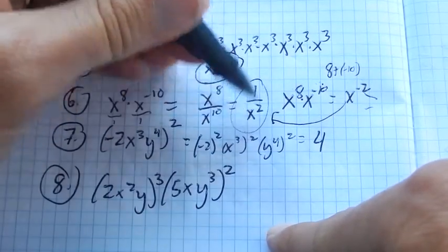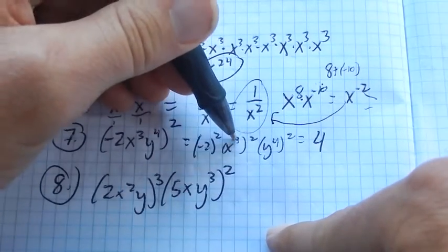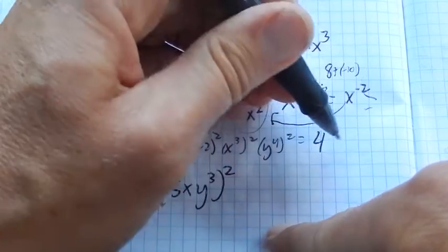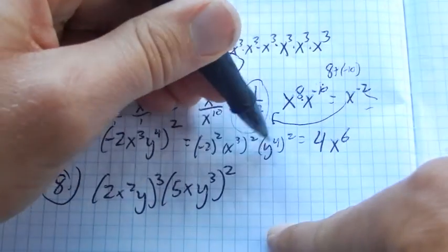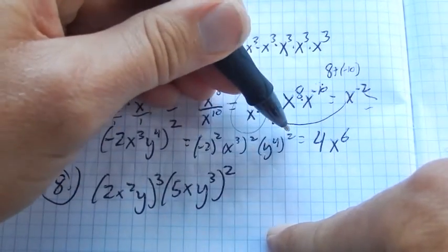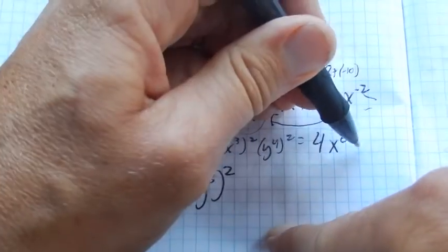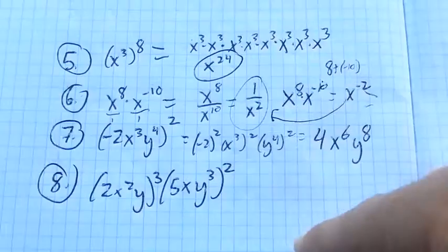Negative 2 squared is 4. x cubed squared, just like up here. Three of them, two times. So that's x to the sixth. Y to the fourth squared. I have four y's. All of them are squared. So now I have 8 y's, all multiplied together.